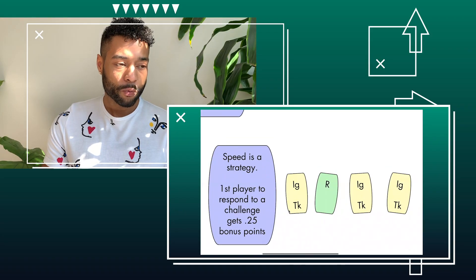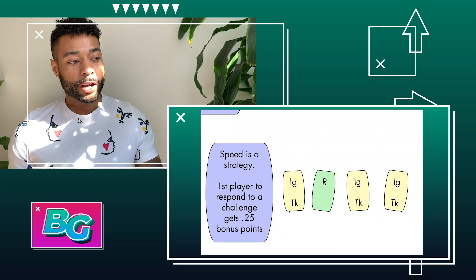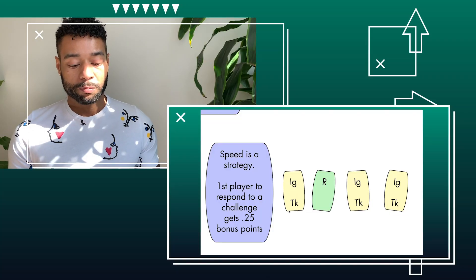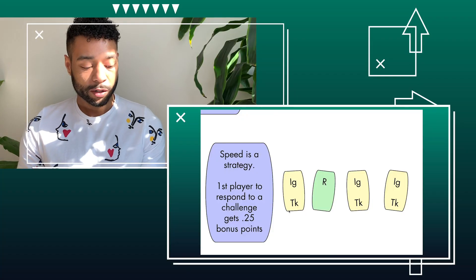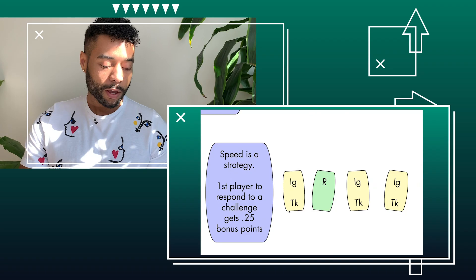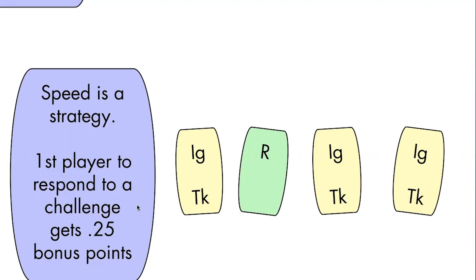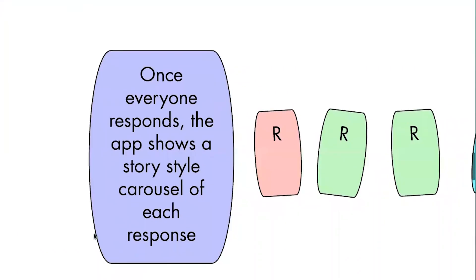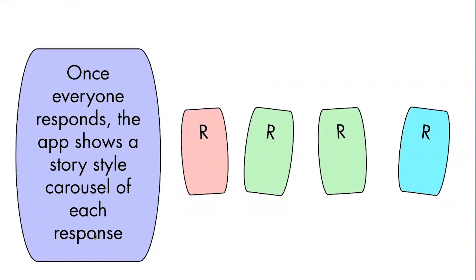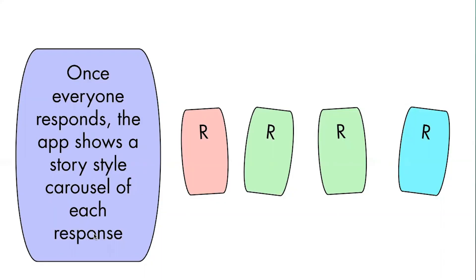Speed is a strategy — you win rounds by having the most points. You get points by people voting on the response to the challenge they think is best, and you also get points by being the first person to choose your response. The person who responds first gets a bonus — the 0.25 value could change, but it indicates you get a bonus for being first. Once everyone has responded, the app shows a carousel of each response, so you get to see this carousel of different responses that everyone had to the challenge.